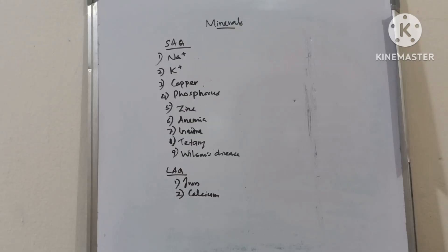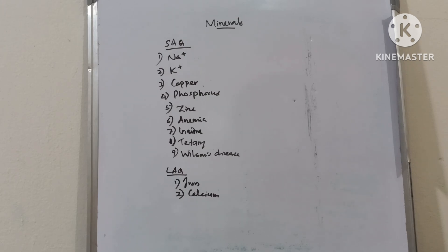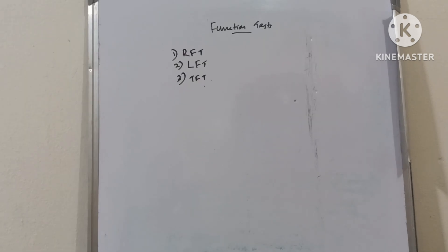Minerals, short answer questions: sodium, potassium, copper, phosphorus, zinc, anemia, goiter, tetany and Wilson's disease. Long answer questions: iron and calcium. Function tests: renal function test, liver function test, thyroid function test.